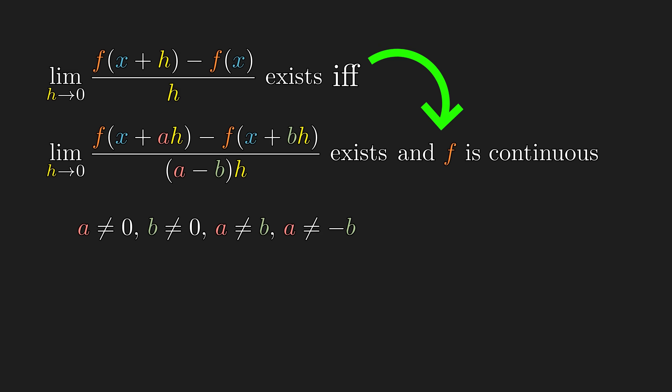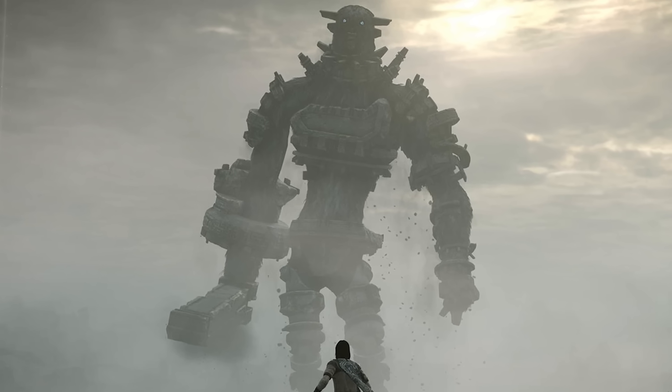The forward proof is pretty trivial, since we get the continuity for free, and the rest is simply pre-calculus level limit manipulation. Backward, on the other hand, is several orders of magnitude more difficult.